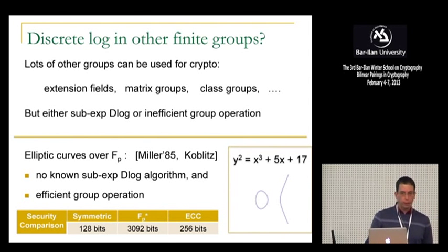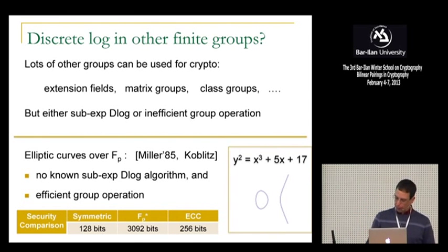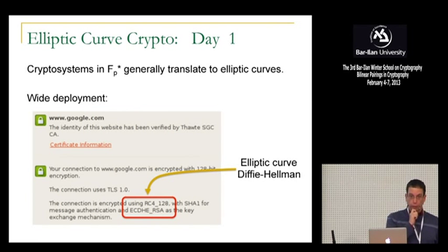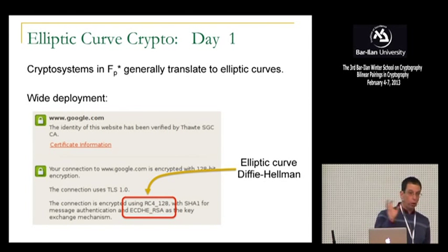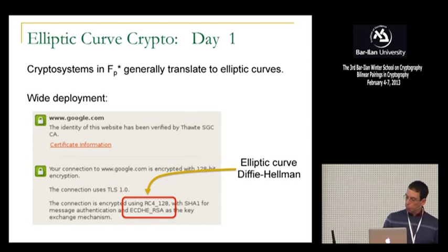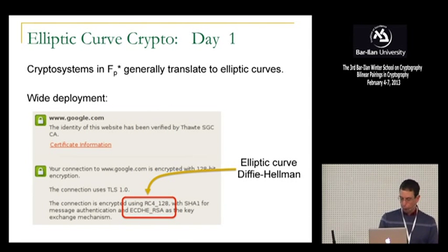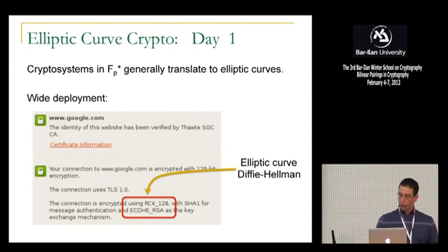So that's kind of the motivation for elliptic curve crypto, and that's why Nigel is going to torture you with elliptic curve math for the rest of the day today. Day number one is basically all about elliptic curve crypto and how these elliptic curves work, how the cryptosystems work over these elliptic curves, what are attacks on the discrete log problem. And basically most of the cryptosystems over FP star translate to elliptic curves, so we actually get systems that we have seen before just with more efficient parameters.